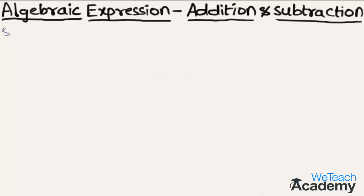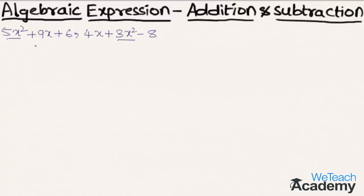Here we have the first expression as 5x² plus 9x plus 6, and we have the second expression 4x plus 3x² minus 8. Now let us write these two expressions one below the other such that the like terms appear in the same column.